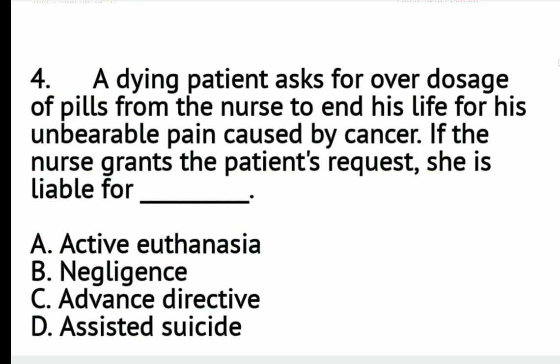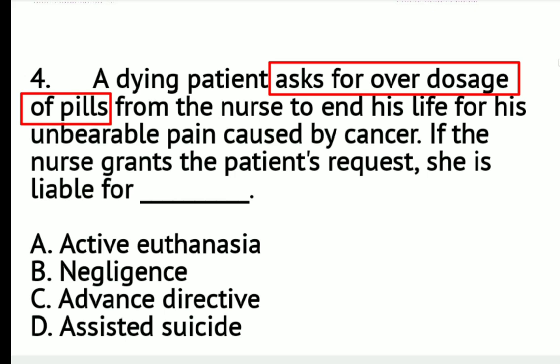Question number 4. A dying patient asked for an overdosage of pills from the nurse to end his life due to unbearable pain caused by cancer. If the nurse grants the patient's request, she is liable for — A. Active euthanasia, B. Negligence, C. Advanced directive, or D. Assisted suicide.